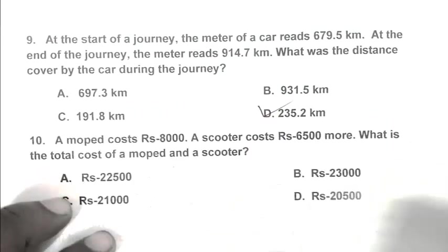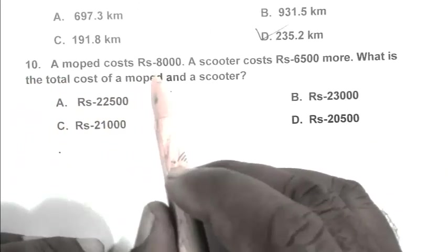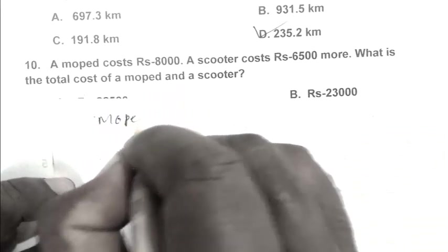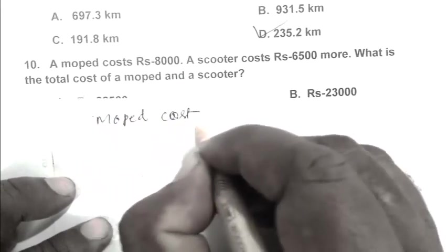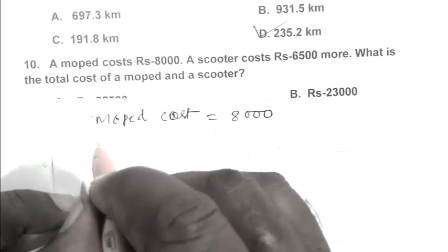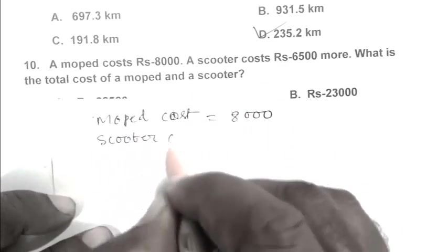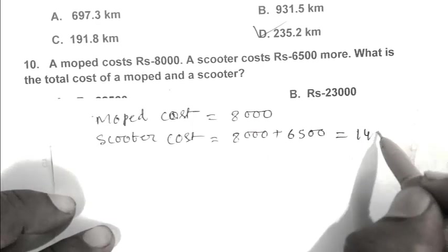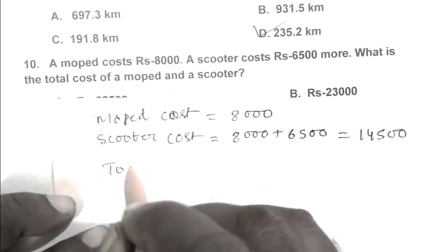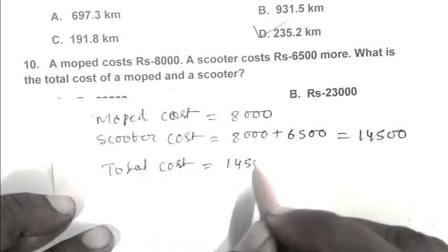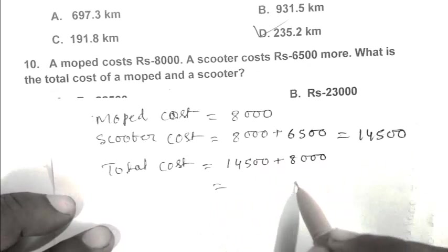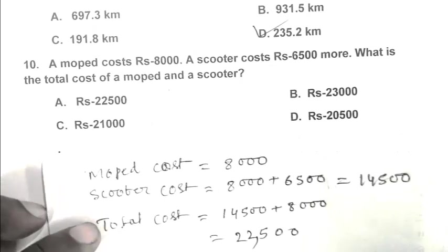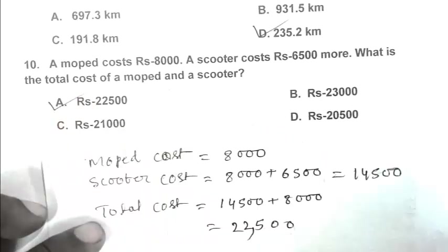Question number 10. A moped costs rupees 8000. A scooter costs 6500 more. What is the total cost of a moped and a scooter? Moped costs 8000, scooter costs 8000 plus 6500, that is 14,500. Total cost is 14,500 plus 8000 equals 22,500. A is the right answer.